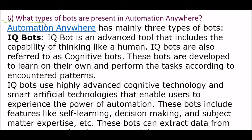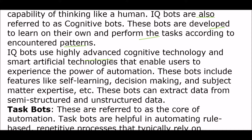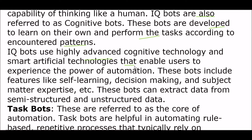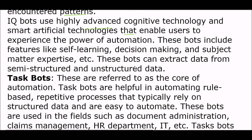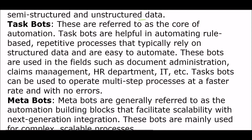Next question: what types of bots are present in Automation Anywhere? Automation Anywhere has mainly three types of bots. First, IQ Bots — an advanced tool that includes the capability of thinking like a human. IQ Bots are also referred to as cognitive bots. These bots are developed to learn on their own and perform tasks according to encountered patterns. IQ Bots use highly advanced cognitive technology and smart artificial intelligence that enables users to experience the power of automation. Features include self-learning, decision making, and subject matter expertise. These bots can extract data from semi-structured and unstructured data.